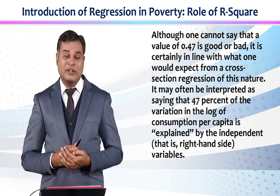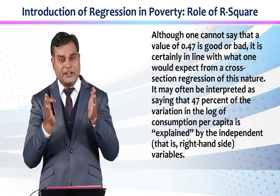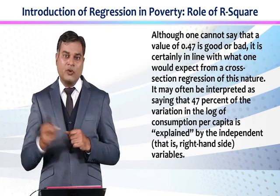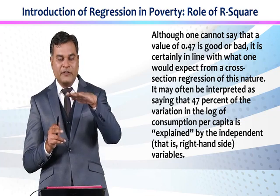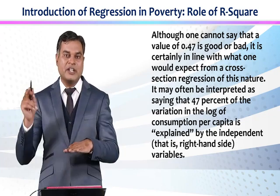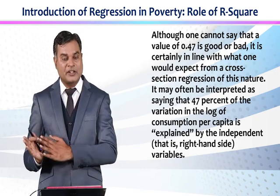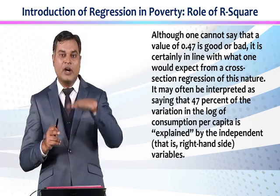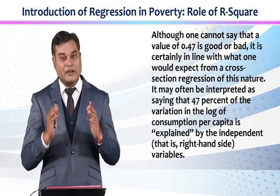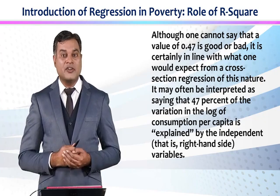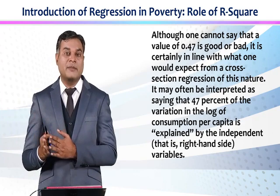For example, if R-square is 0.47 in the case of poverty and education, and you include another variable — if due to the inclusion of the new variable, R-square's value decreases below 0.47, it means that variable is not relevant and should be dropped. If adding a variable increases R-square's value, it means your variable is relevant to poverty or your specific model. So we can use R-square to include or exclude variables from the model.